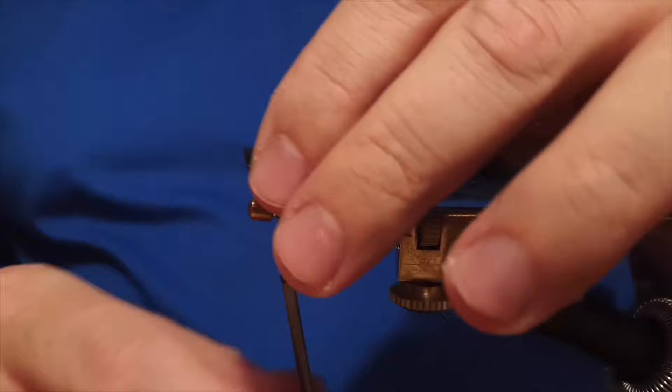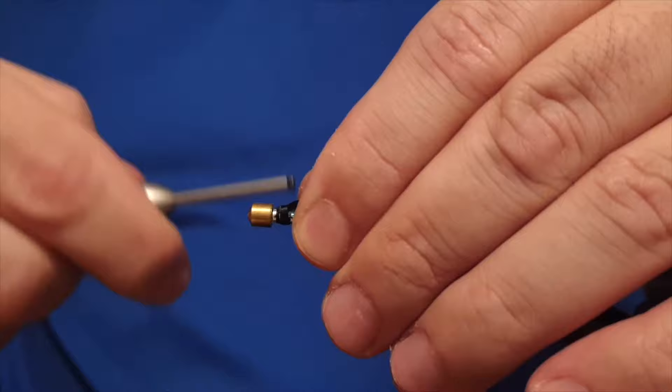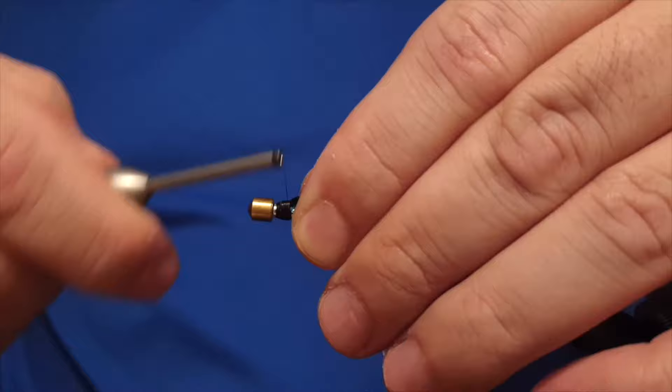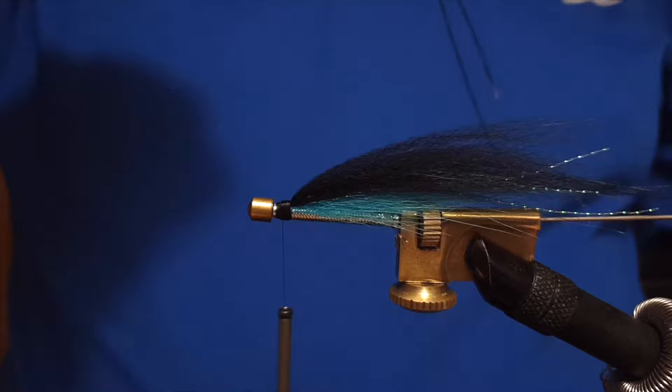We'll trim off the end and prepare it, then get that down towards where the head of the fly is located. Then it will start to form the head of the fly. This fly is quite a process—you have to prepare everything and it's going to take some time.